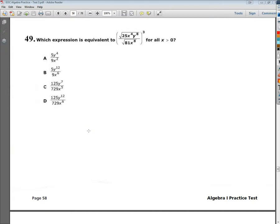Welcome, this is the Tennessee End of Course Practice Test number 3 for Algebra 1, question number 49. The question says, which expression is equivalent to the square root of 25x to the 4th y to the 8th over the square root of 81x to the 8th raised all to the 3rd power?